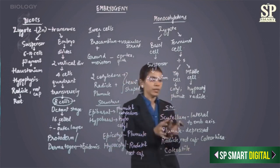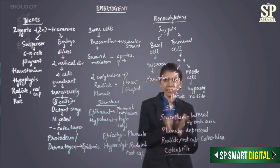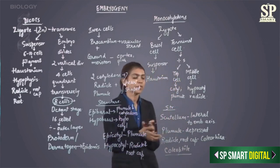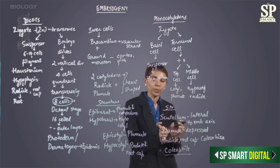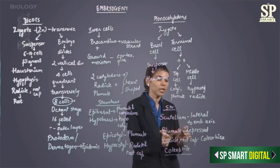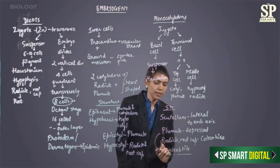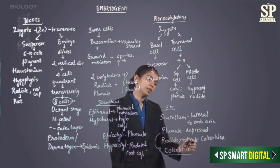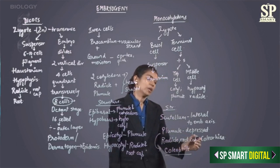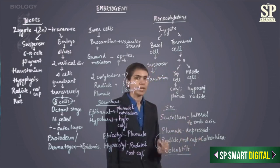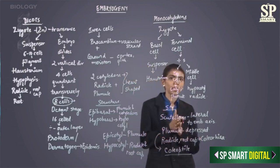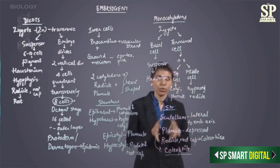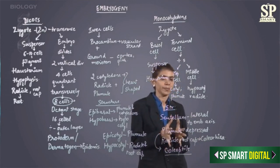So here we have one single cotyledon in monocots which is called the scutellum, the plumule which is covered by the coleoptile, and the radicle and root cap which are covered by the coleorhiza. So this was about the structure of the embryo in monocots and in dicotyledons.